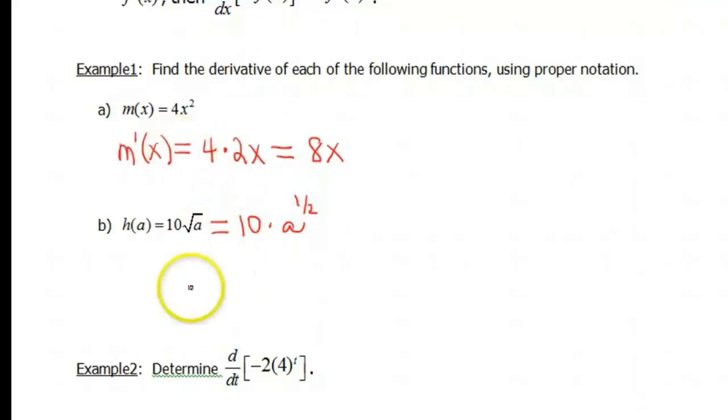So this is very similar to the one we just did up above. So h prime of a is going to equal, bring down that coefficient, 10 times. And now we need to do the derivative of a to the 1/2. Well, again, that's like a power x to the n, so we can follow our power rule. So that's gonna be 1/2 a to the negative 1/2.